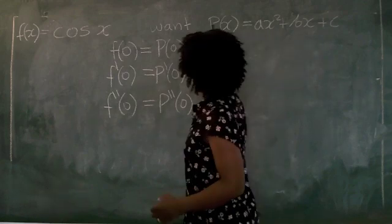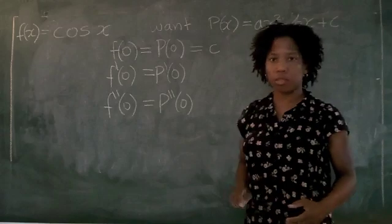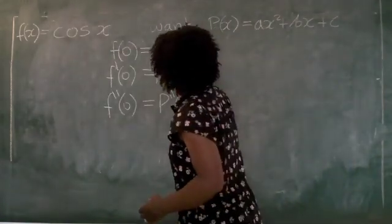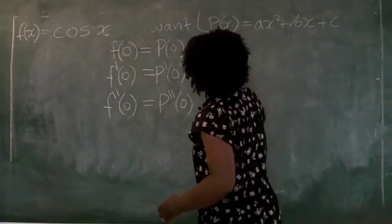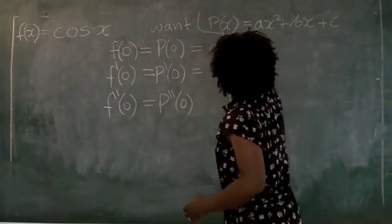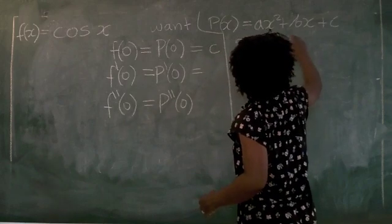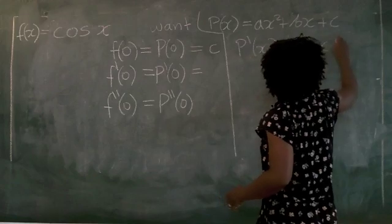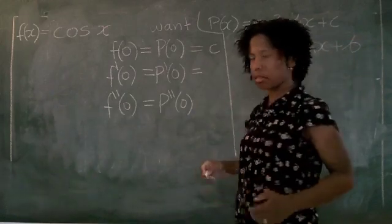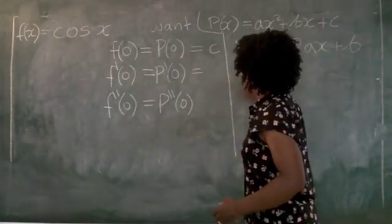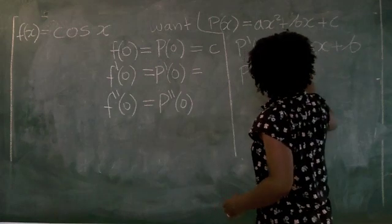So p of 0 is just going to be equal to c, if we plug 0 into this expression. p prime at 0, and we need to take the derivative of this curve, so let me just draw a line here. p prime of x is equal to 2ax plus b. Just treating a, b, and c as constants and taking the derivative. And p double prime at x is going to be equal to 2a.